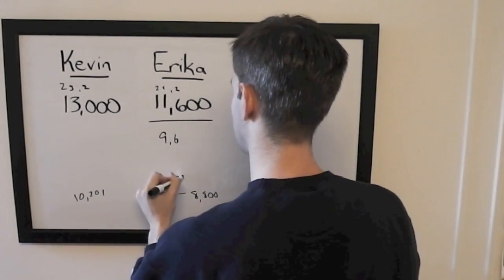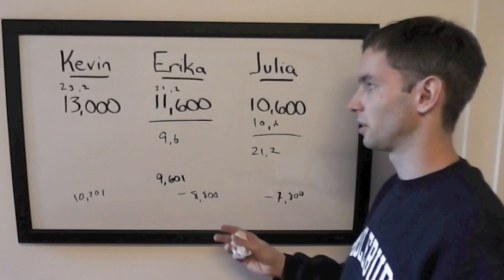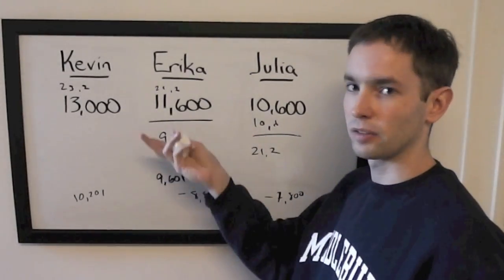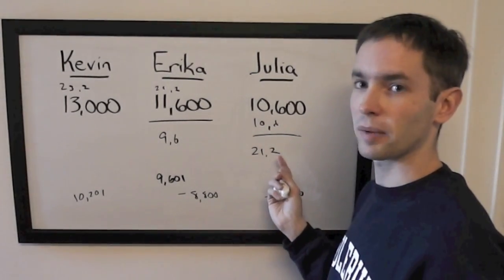So that puts Erica in an interesting situation where she can either go big to lock out Julia or stay small to stay above Kevin if he's wrong, but she'll risk getting passed by Julia.